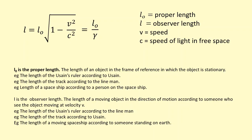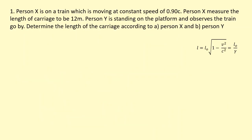Person X is on a train which is moving at a constant speed of 0.9 times the speed of light, so that's our v there. Person X measures the length of the carriage to be 12 meters. Person Y is standing on the platform and observes the train go by. Determine the length of the carriage according to person X and person Y.